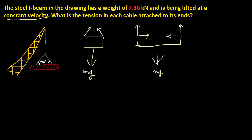The angle shown here is 70 degrees, and since both sides are symmetric, both angles are 70 degrees, which means the tension in both cables is equal — both are T.